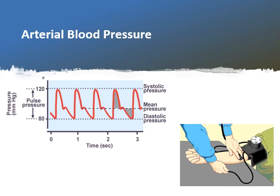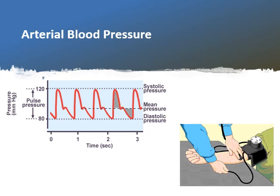If the arterial blood pressure exceeds 140 over 90 mmHg, we call this hypertension. If it is less than 90 over 60 mmHg, it's called hypotension.